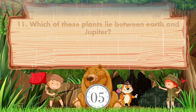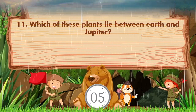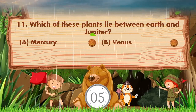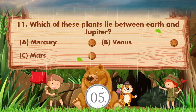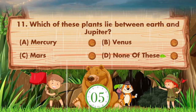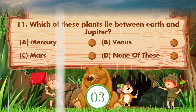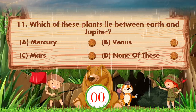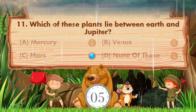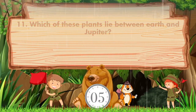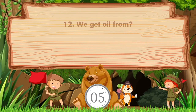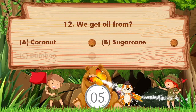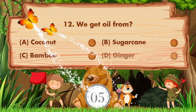Which of these planets lies between Earth and Jupiter? Option A is Mercury, B Venus, C Mars, D none of these. Answer is option C: Mars.